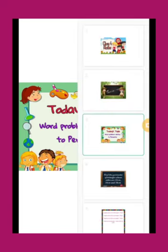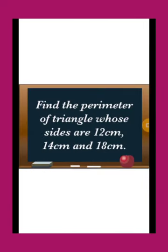The first word problem: find the perimeter of a triangle whose sides are 12 centimeter, 14 centimeter, and 18 centimeter. A triangle is given with sides 12, 14, and 18 centimeter, and you have to calculate the perimeter of the triangle.